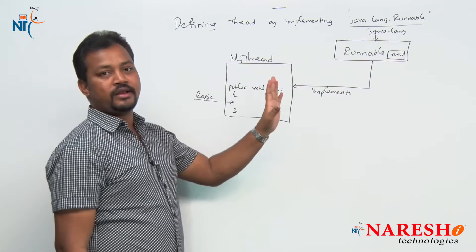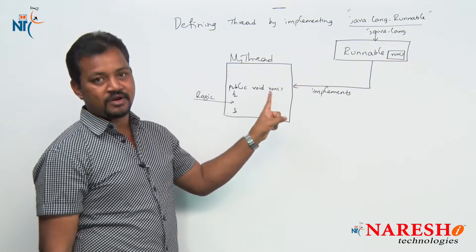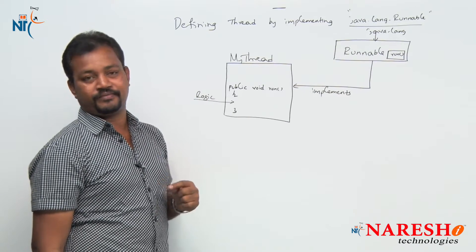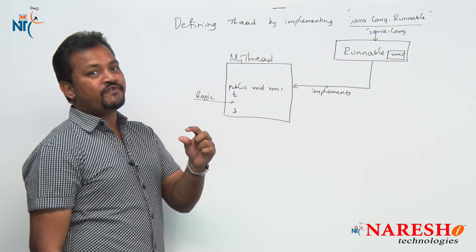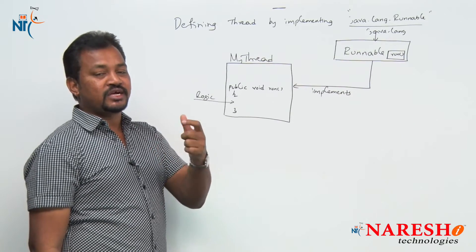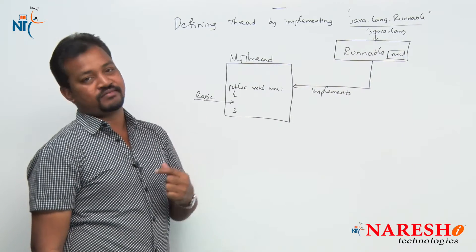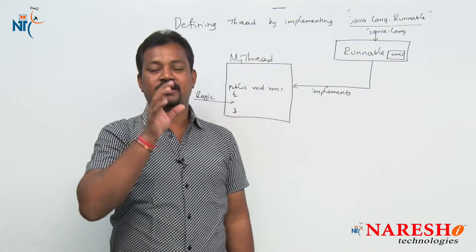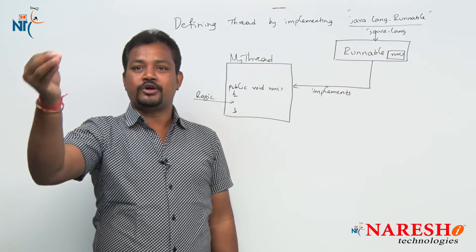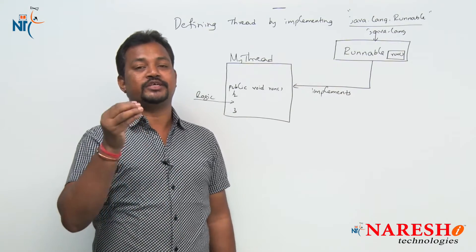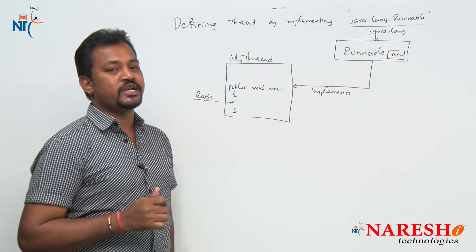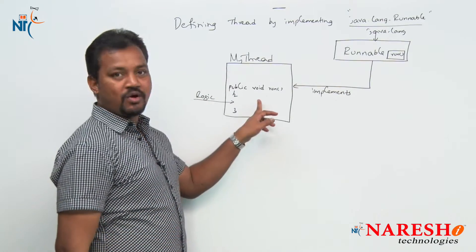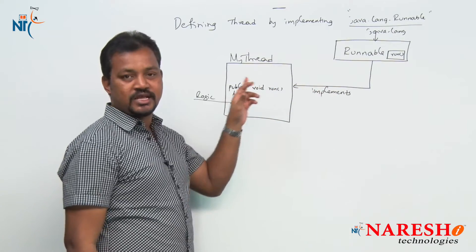If you observe clearly, the start method is not available here. In the multi-threading process, the start method plays a key role — whenever the start method is called, it registers the thread within the thread scheduler, creates one separate thread stack within the Java stack, and the run method is copied onto that stack for execution. We saw this diagrammatic representation in java.lang.Thread. So in this diagram, we cannot see the start method.